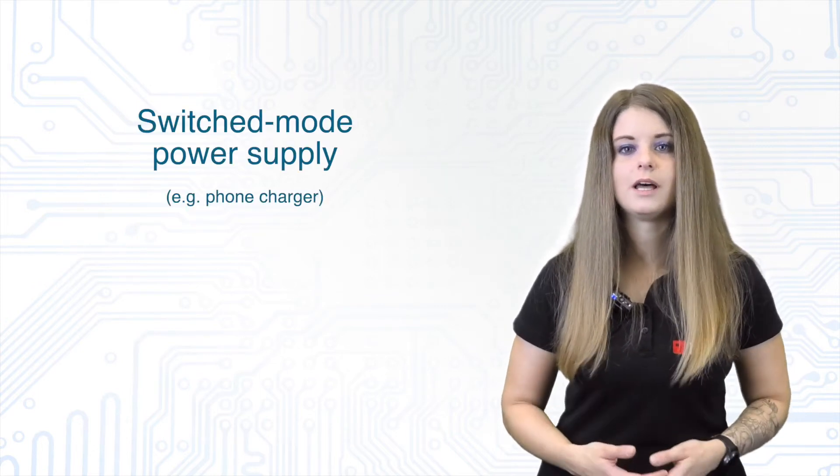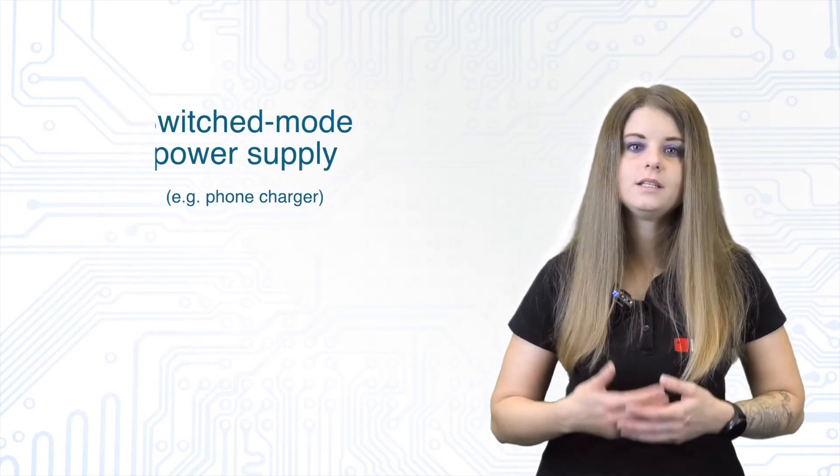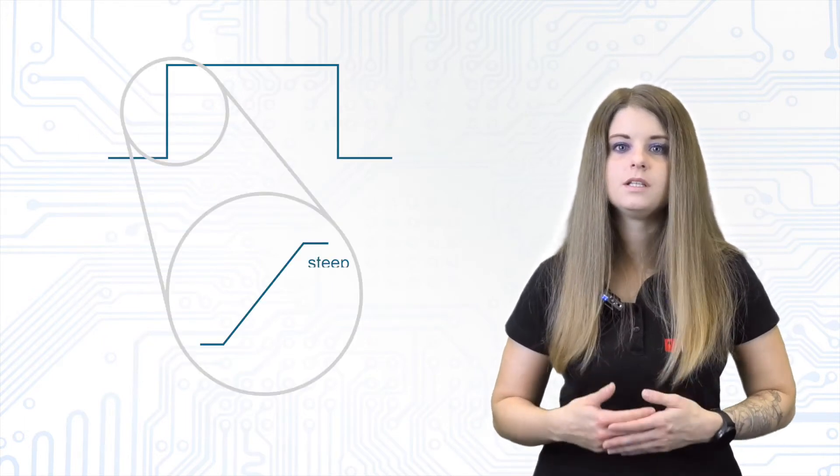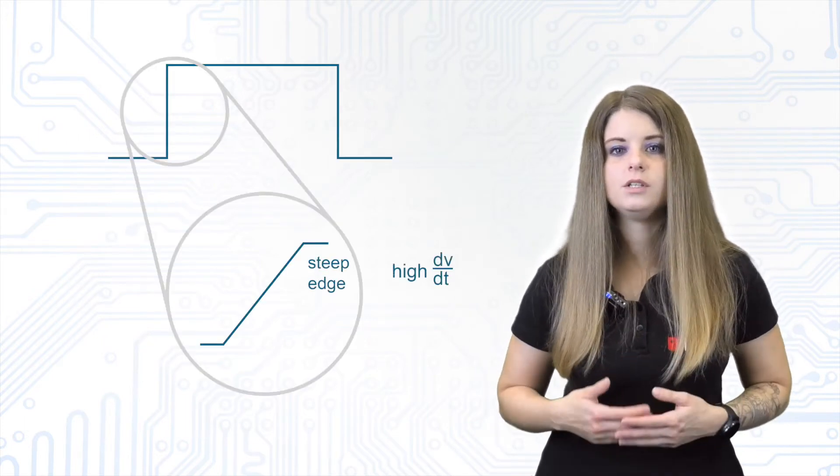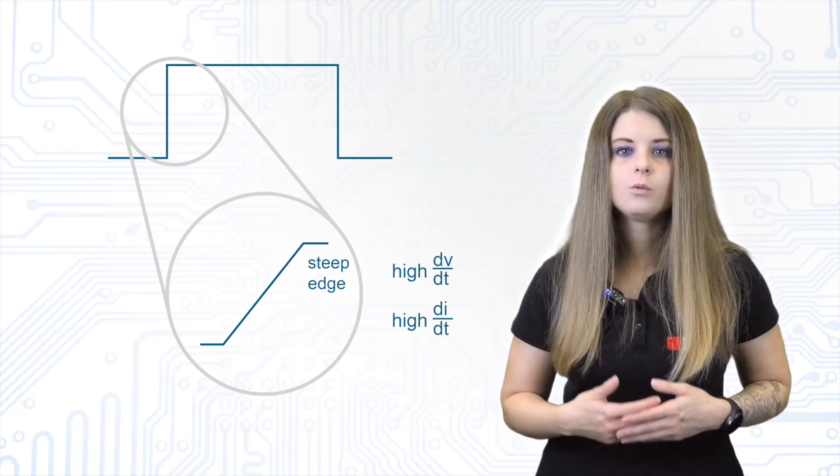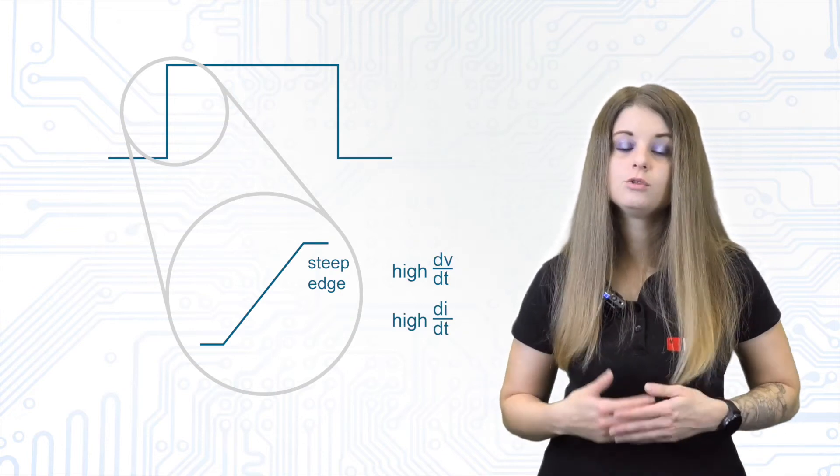Common sources of EMC emissions are for example digital circuits and switched mode power supplies. The reason why these applications emit many disturbances are the steep signal edges with high dV/dT and dI/dT which occur in such applications due to switching.